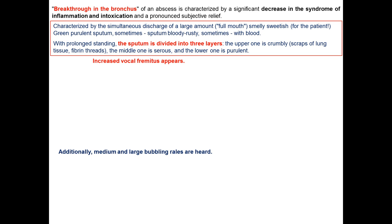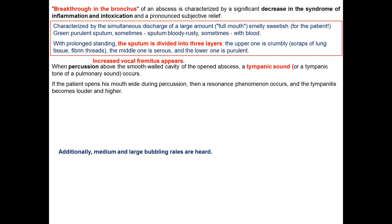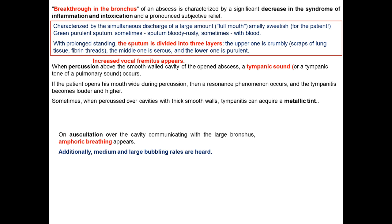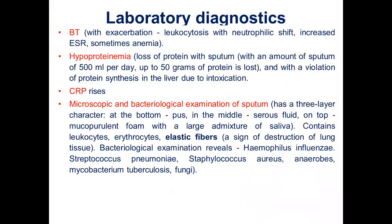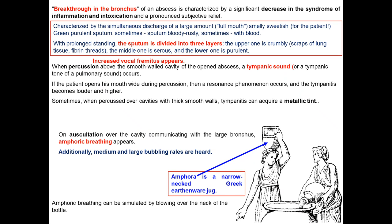Increased vocal fremitus appears during palpation. On percussion above the smooth-walled open cavity, a tympanic sound or tympanic tone of pulmonary sound is detected. If the patient opens his mouth wide during percussion, a resonant phenomenon occurs and the tympanic sound becomes louder and higher. Sometimes when percussed over cavities with a thick smooth wall, the tympanic sound can acquire a metallic tint. On auscultation over the cavity communicating with a large bronchus, amphoric breathing appears.